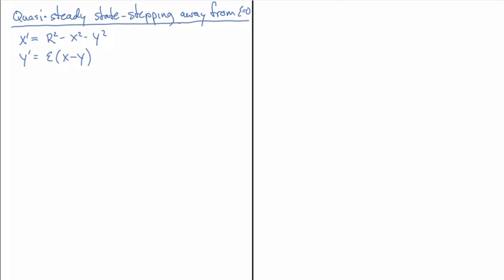In this video I'd like to continue analysis of the same system that had this quasi-steady-state structure, and I'd like to show you how to step away from the epsilon equals zero case.